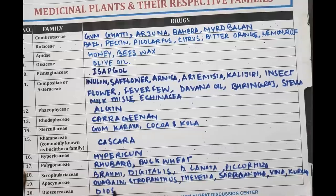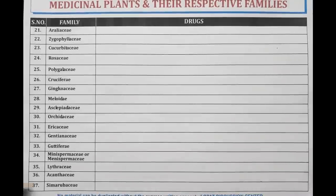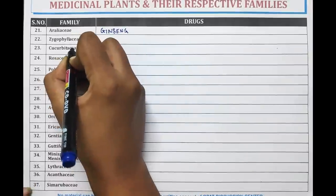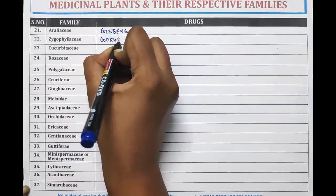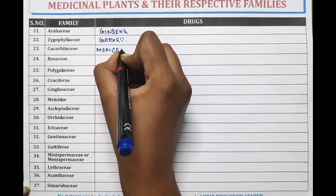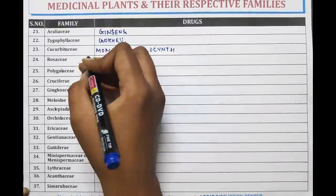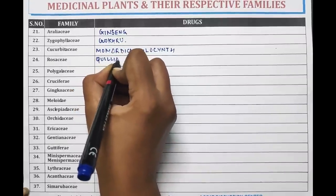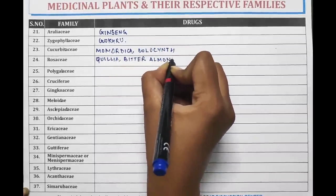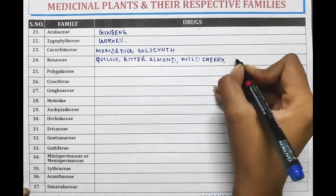Dioscoreaceae is the family of Dioscorea. Araliaceae is the family of Ginseng. Zygophyllaceae is the family of Gokhru. Cucurbitaceae is the family of Momordica and Colocynth. Rosaceae is the family of Quillaia, Bitter Almond, Wild Cherry, and Almond Oil.